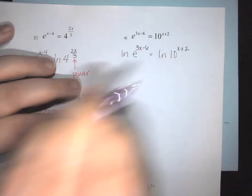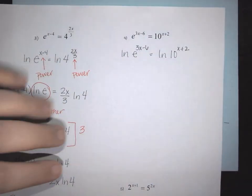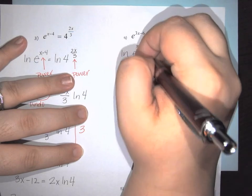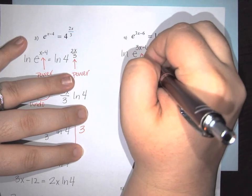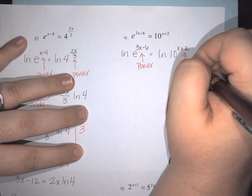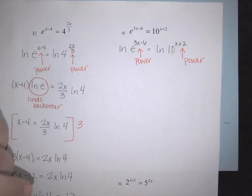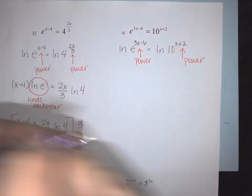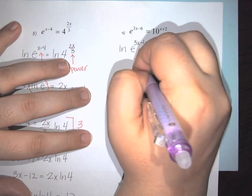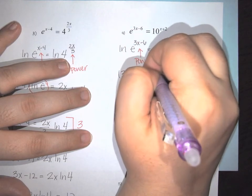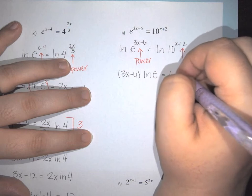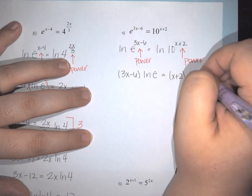Applying the power rule on both sides: (3x minus 6) times natural log of e equals (x plus 2) times natural log of 10.